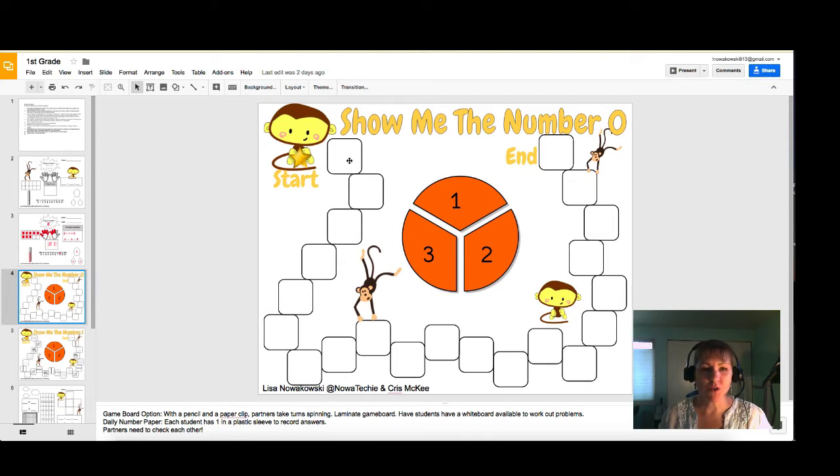Many first graders have trouble moving on. They'll often count the first square as one. We want to show them how to hop and move and you'll notice that there only goes to one, two, and three. So using a pencil and a paper clip, put those in the center and spin. This also allows you to use ordinal numbers.